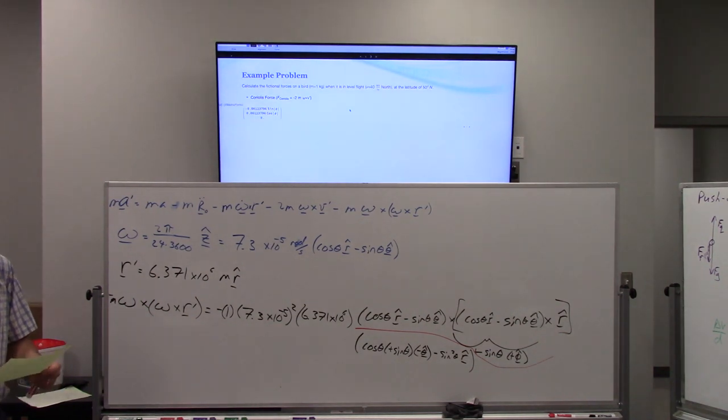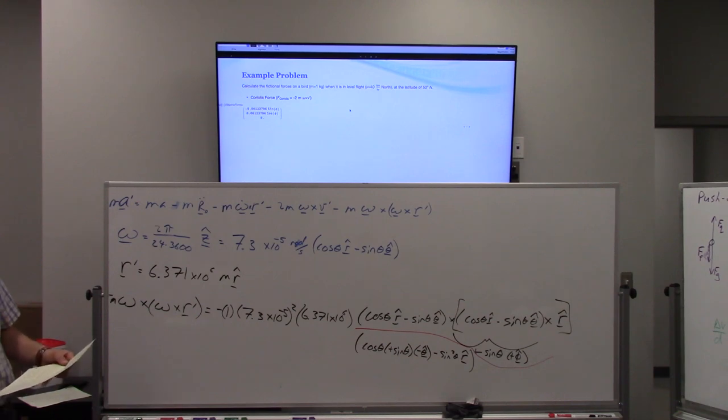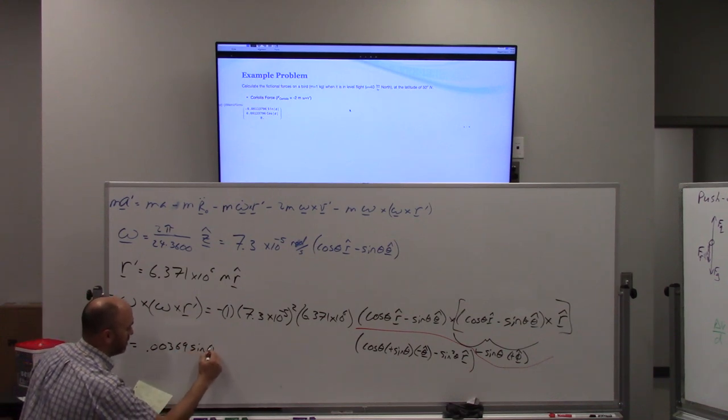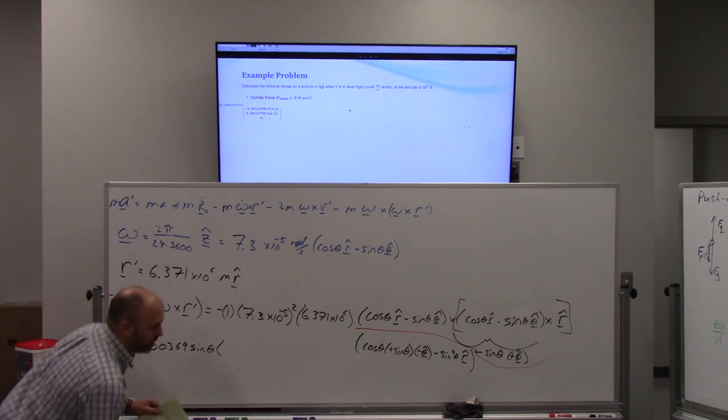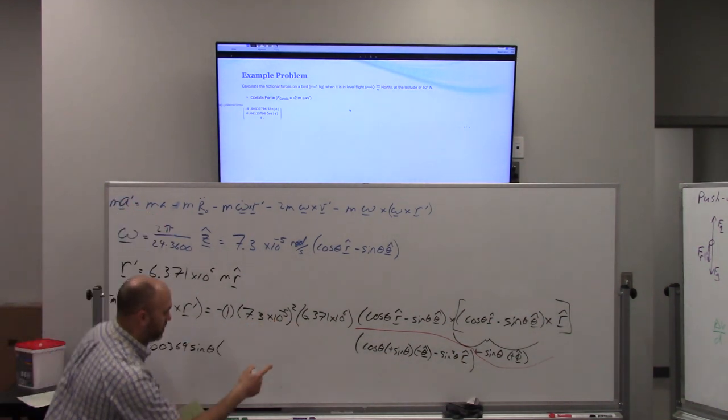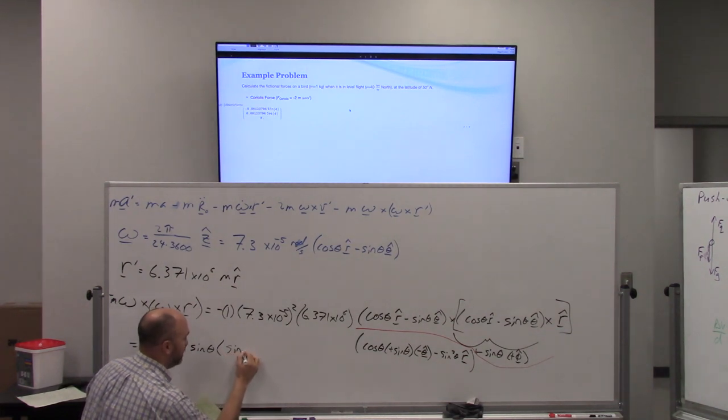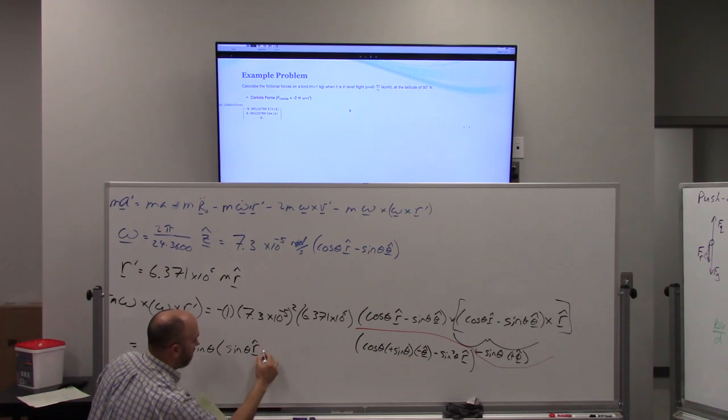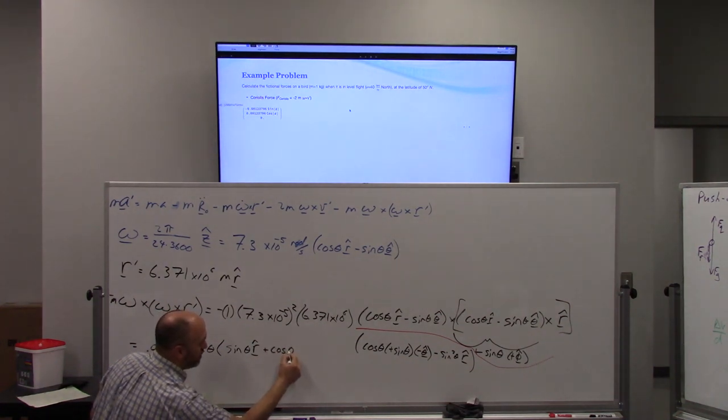Spit out a bunch of numbers. Okay so when I punch all this out here's what I get equals 0.00369 and I'm going to pull the sine theta out of that and flip-flop the order so that it's in the order of the spherical coordinates. The r hat piece comes first. I'm going to have sine theta r hat and then I'm going to have plus cos theta theta hat.